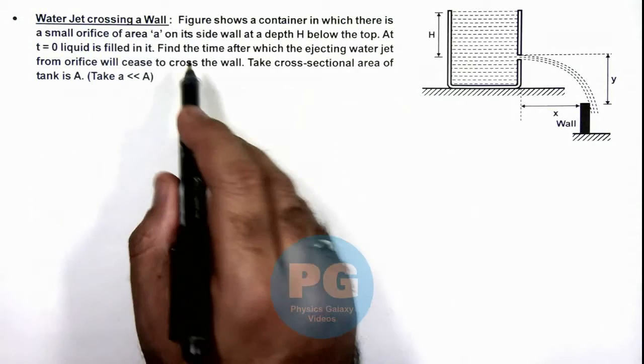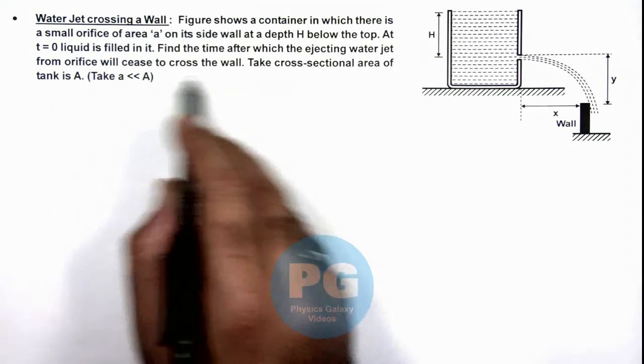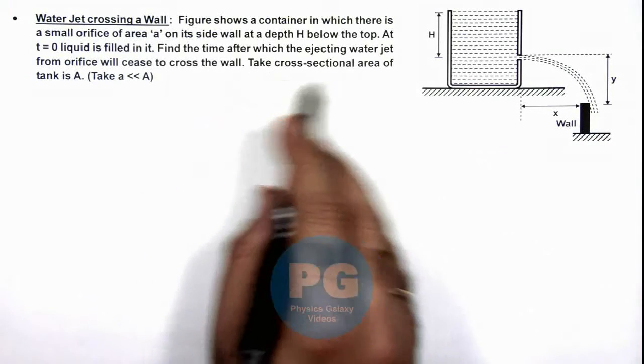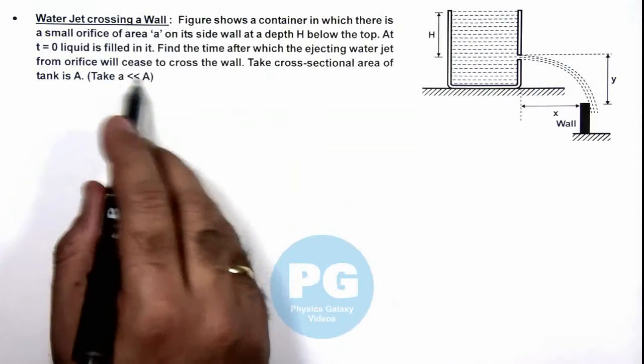We are required to find the time after which the ejecting water jet from orifice will cease to cross the wall. And we are given that the cross sectional area of tank is A_y and that of orifice is very less compared to A_y.